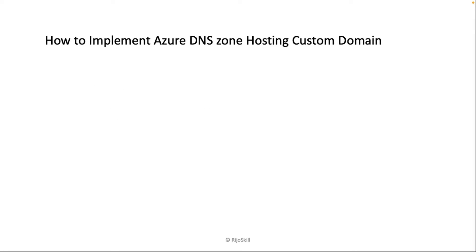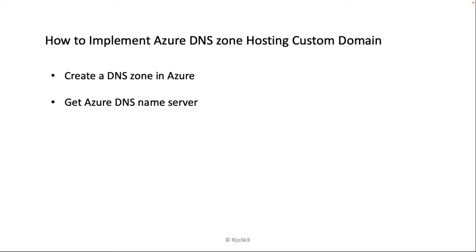So how to implement the Azure DNS zone for hosting a custom domain? Step one: create the DNS zone in the Azure portal. Step two: get the Azure DNS name servers. After creating your DNS zone, you will receive the Azure DNS name servers.